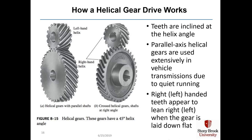This slide shows how a helical gear drive works. In a helical gear, the teeth are inclined at the helix angle. Parallel axis helical gears are used extensively in automobile transmissions because they're very quiet. You can have right-handed teeth — where when the gear is laid flat the teeth appear to lean right — or left-handed teeth that appear to lean left. These gears in the diagram have a 45-degree helix angle, which is why you're able to see the curving of the teeth through space.